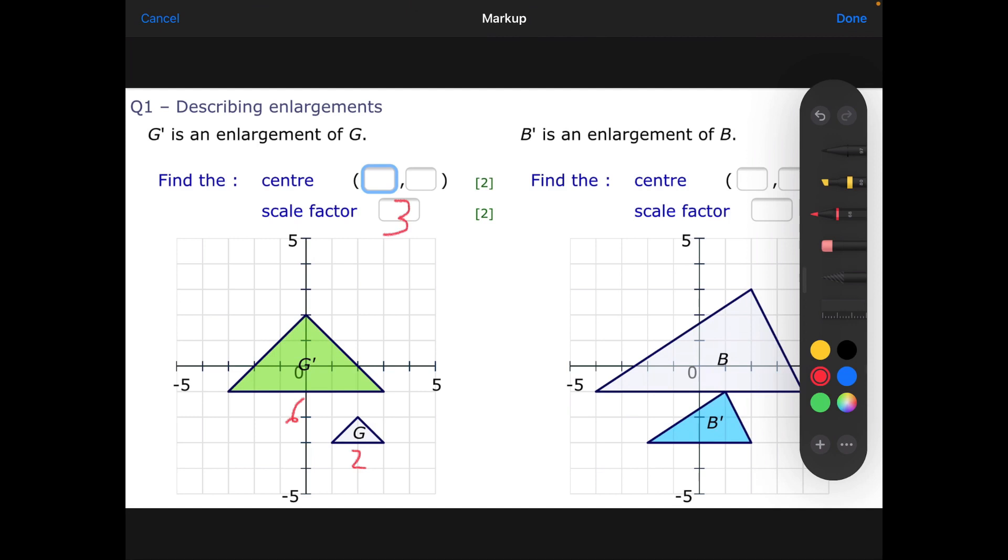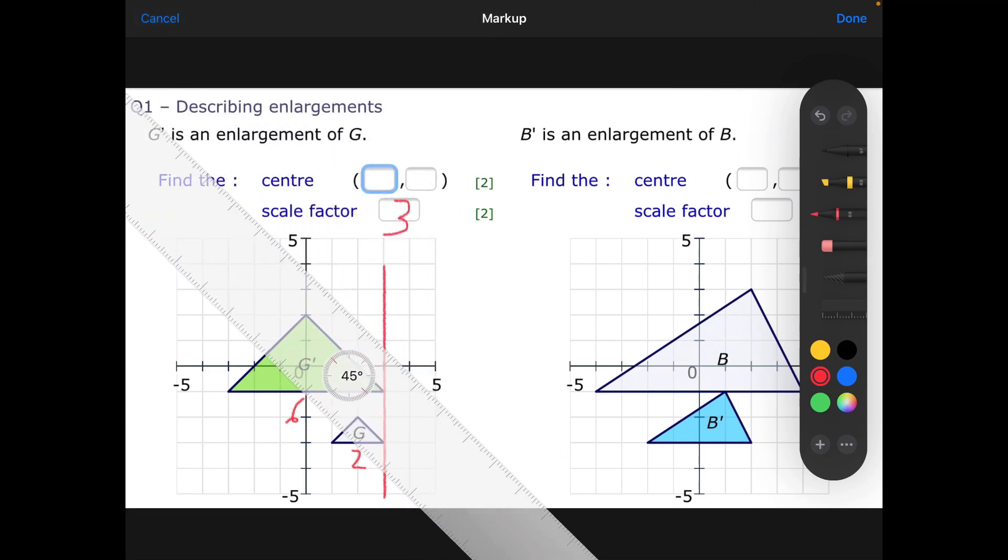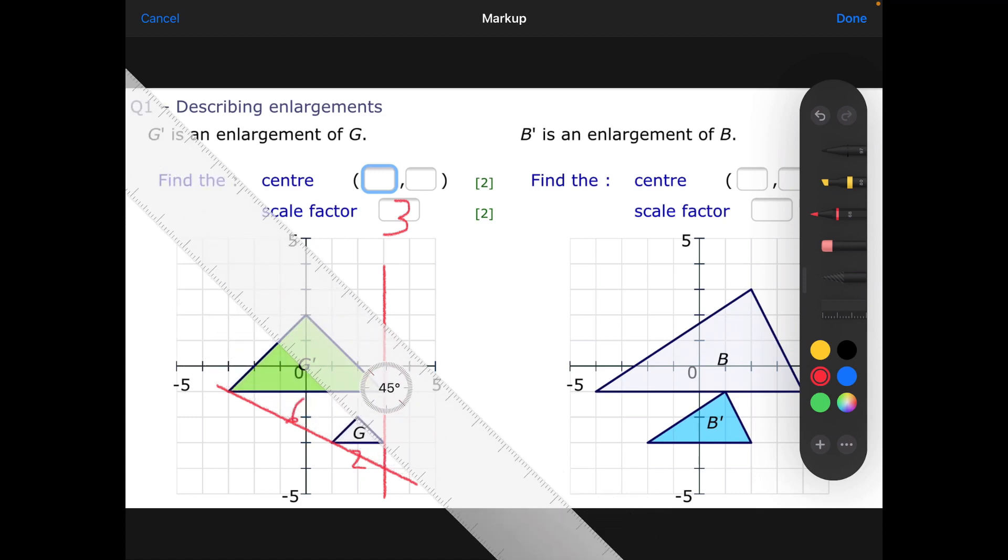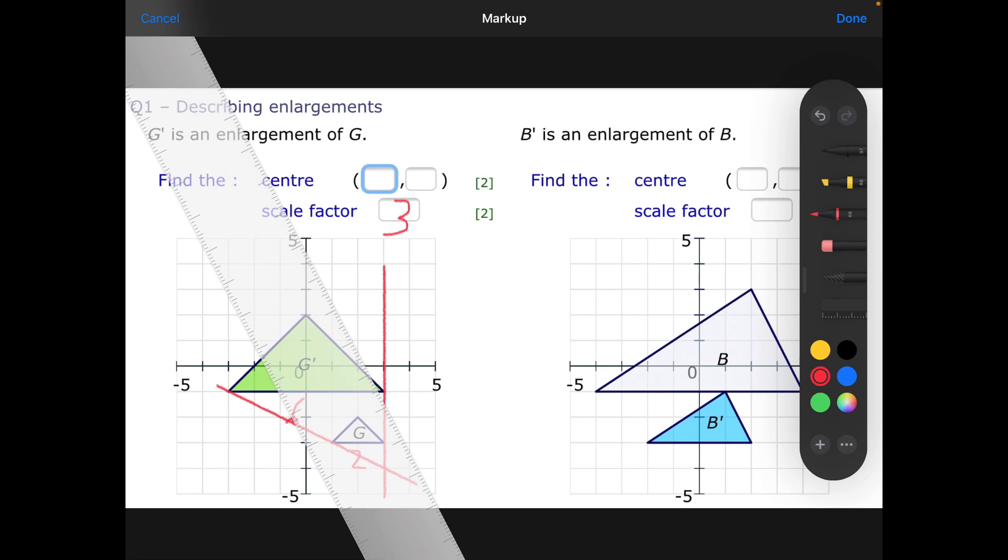To find the center of enlargement, all you have to do is join corresponding corners of the shape with straight lines, and the point where the lines meet is the center of enlargement. Those two corners go there, and if I join up these other two corners carefully like so, they meet at the point (3, -4). Just to be sure, I'll join those two corners, and I can see they actually cross at the point (3, -4). So it's an enlargement, scale factor 3, with center of enlargement at (3, -4).